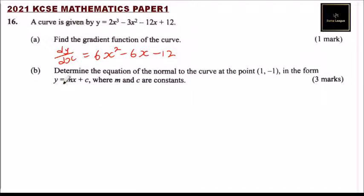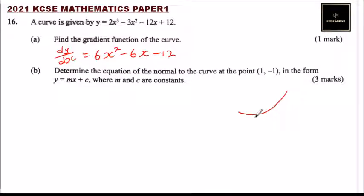Part B: determine the equation of the normal to the curve at point (1, -1) in the form y = mx + c where m and c are constants — you get 3 marks. When we talk of the normal, if we take this curve, to get the gradient at the point (1, -1) we get the gradient of the tangent.